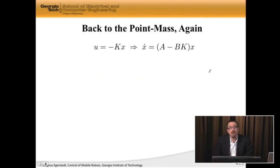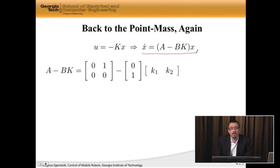So if we go back to our point mass again, I pick u is negative Kx. Then I get x dot is A minus BK times x. We've seen this before. This is the closed loop dynamics. And in particular, if I plug in what K is, I get A minus BK being these two matrices here. And if I compute that, I get 0, 1, negative k1, negative k2. And I encourage all of you to perform this multiplication at home, just to make sure that you trust that this is indeed what we get.